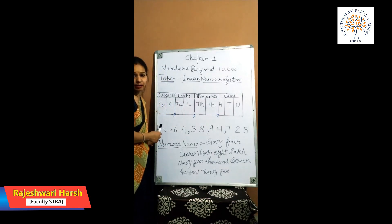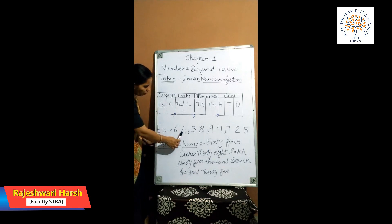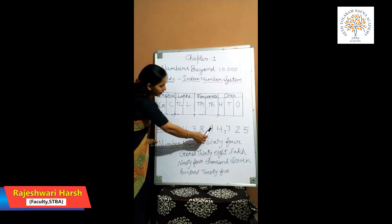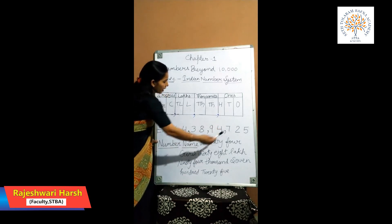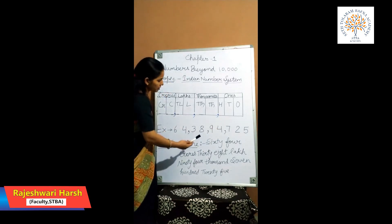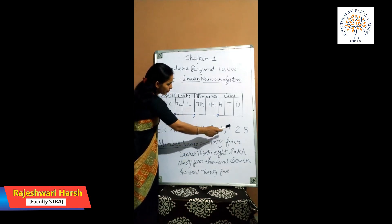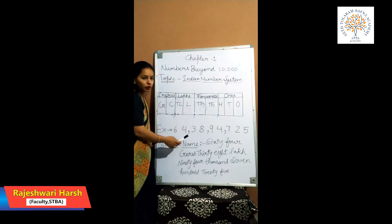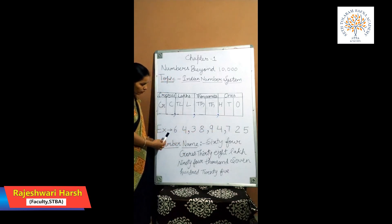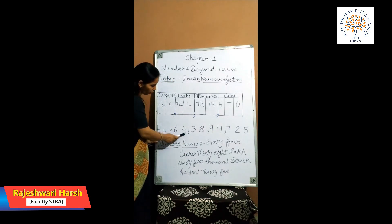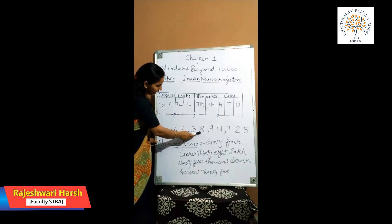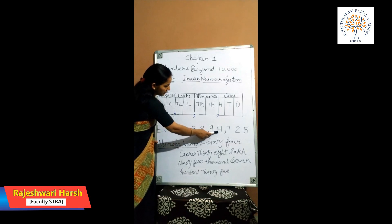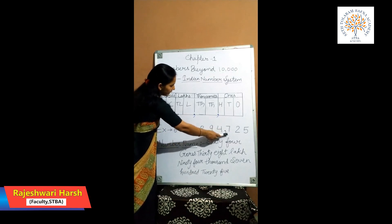Now let's take an example. The number is 643894725. We put a comma after three digits from the right side, and then put commas after every two digits. So the number name of this number is 64 crore 38,94,725.